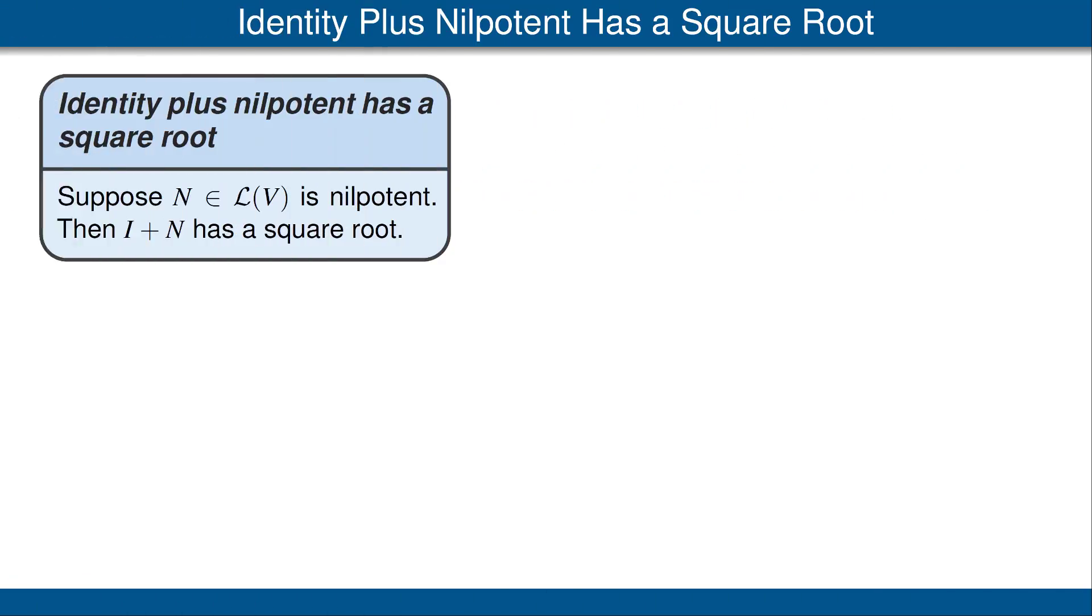Now that we know that not every operator has a square root, it's of interest to find conditions that guarantee a square root. Here's our first result in that direction. Notice that for this result, we do not require that our scalar field be the complex numbers.